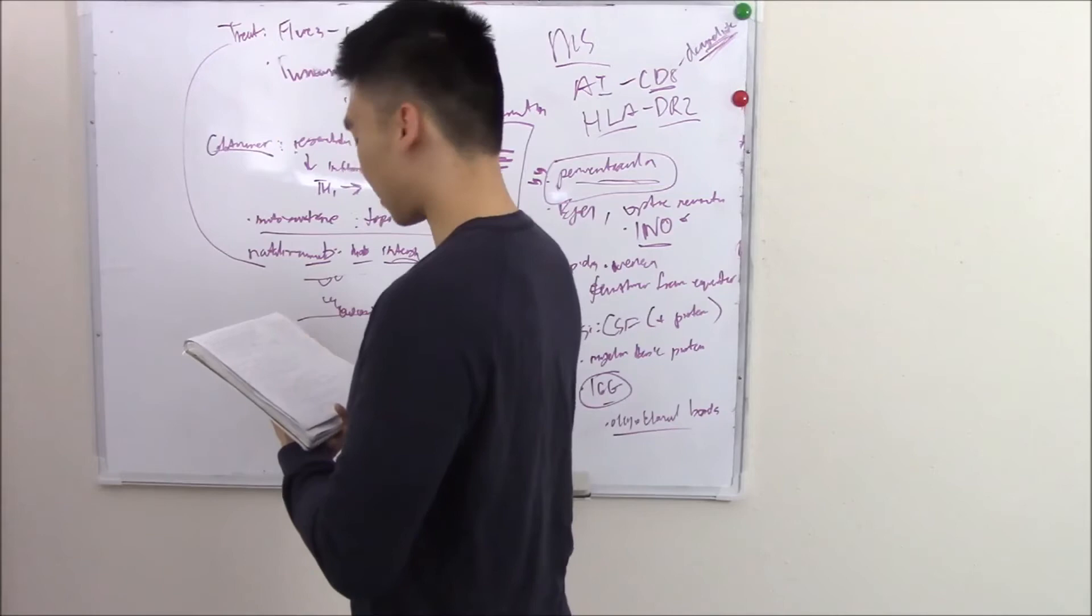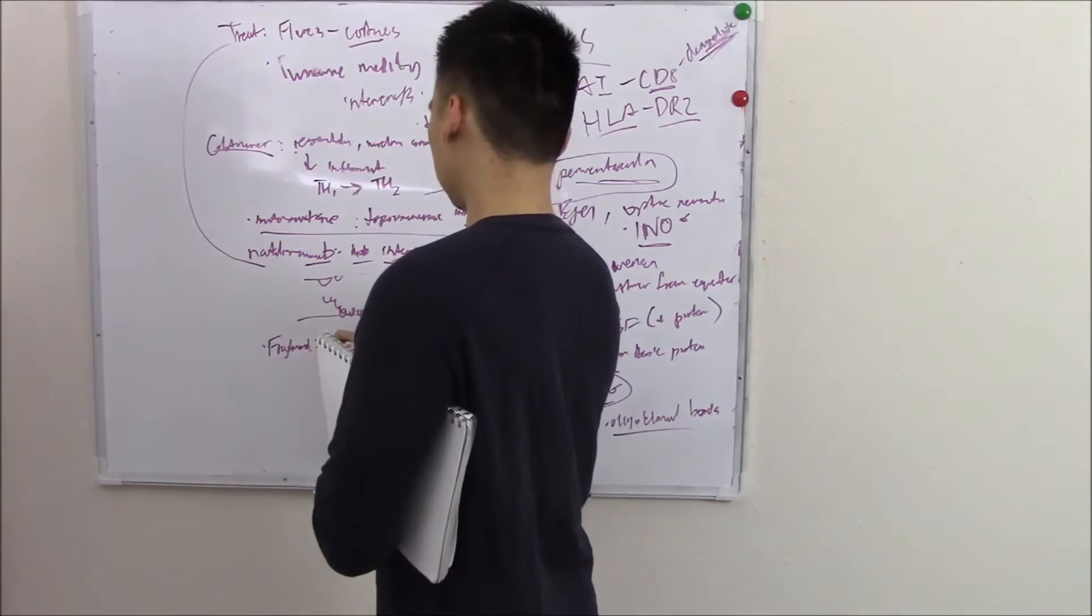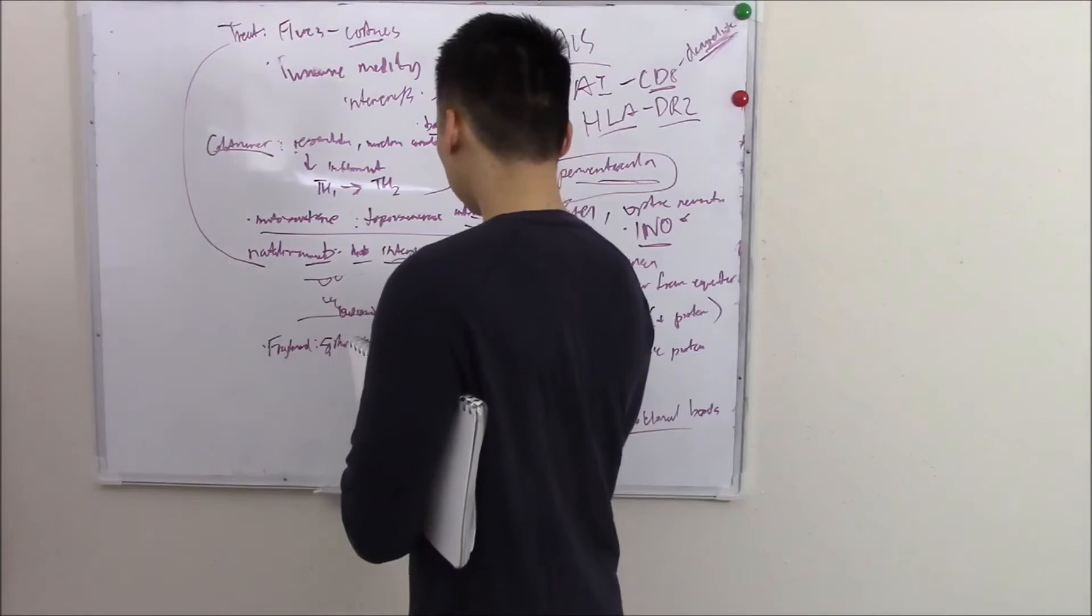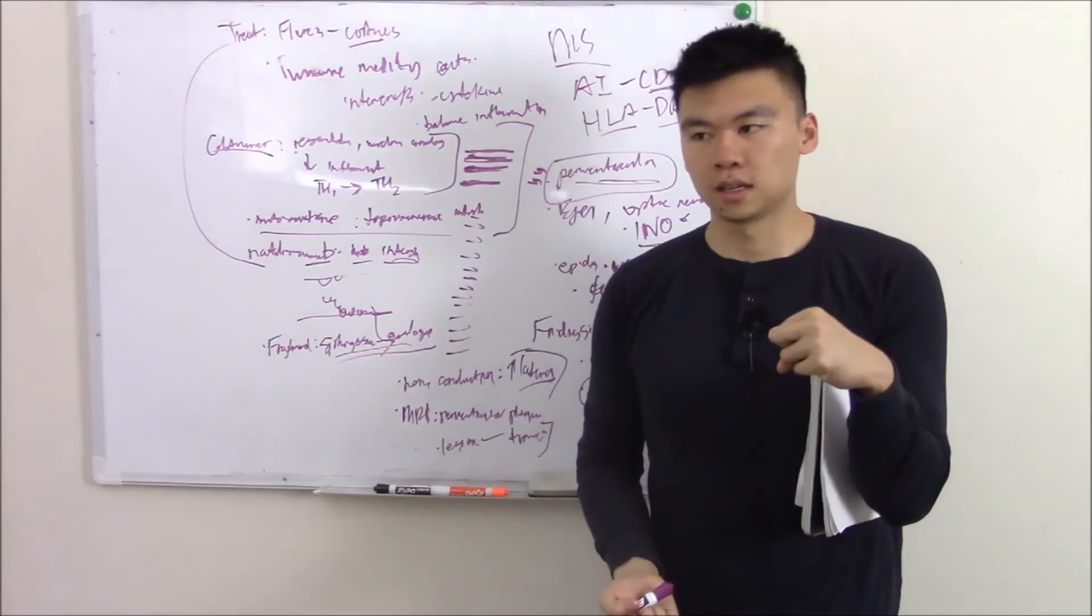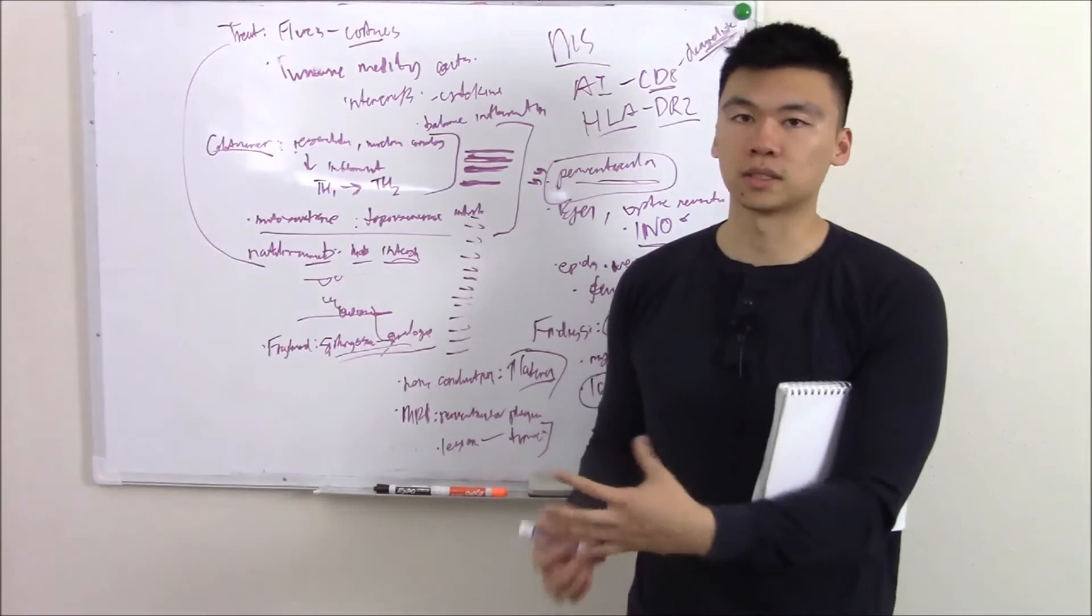The last one we're going to talk about is fingolimod. Fingolimod is a sphingosine analog. If you do want to know, it hits a receptor and causes your leukocytes to stay in the spleen and not leave the spleen. That's a pretty clever drug—stays in the spleen, doesn't go to our brain, cause these attacks.